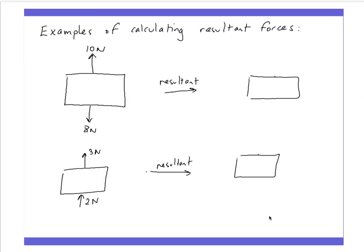Examples of how to calculate resultant forces. Say you've got this object here - 10 newtons upwards, 8 newtons downwards. What will the resultant be? And this one here, the object has got three newtons going upwards and two newtons going upwards. Now what are you going to do? Are you going to add them together or are you going to take them away? Let's have a look.